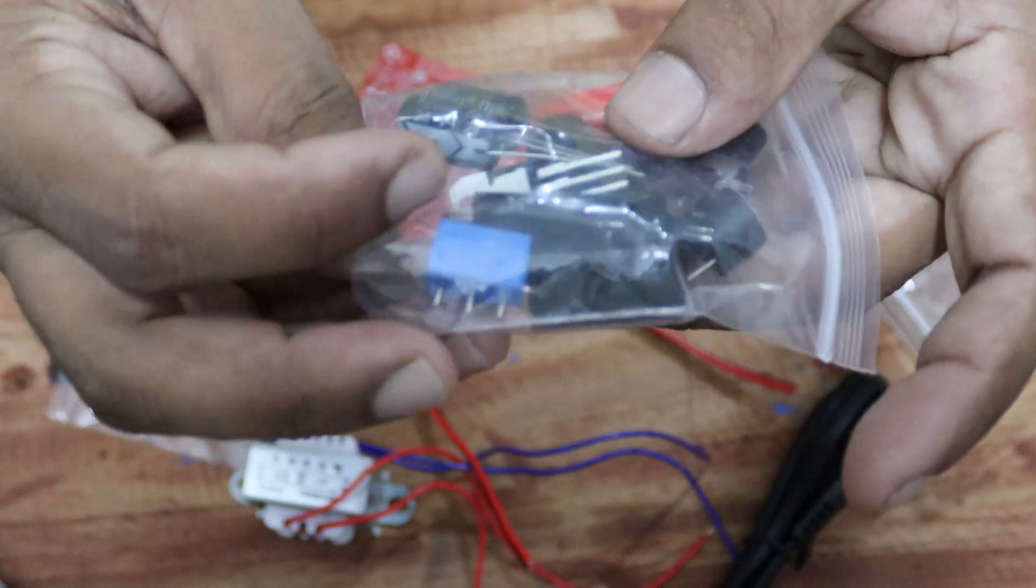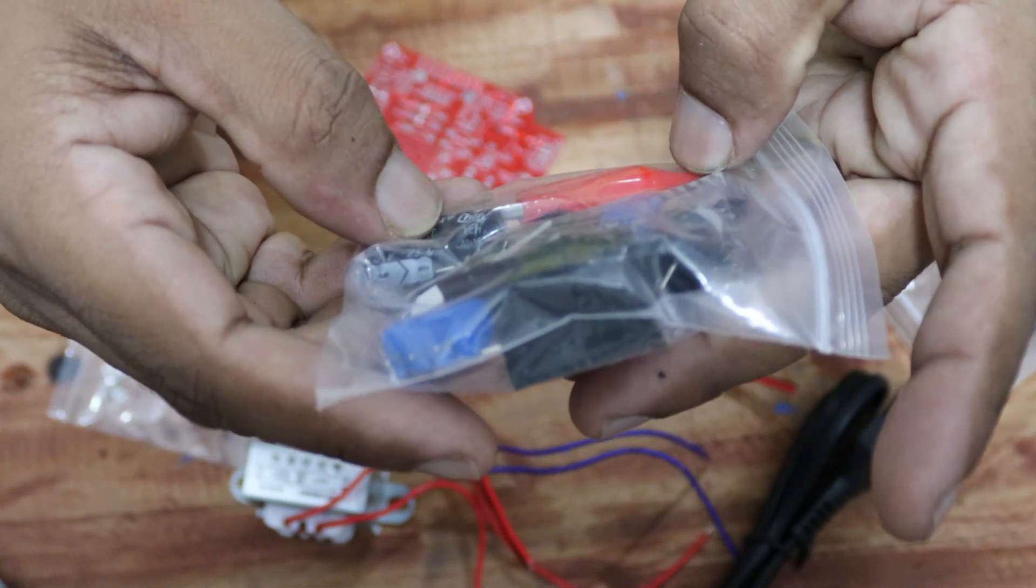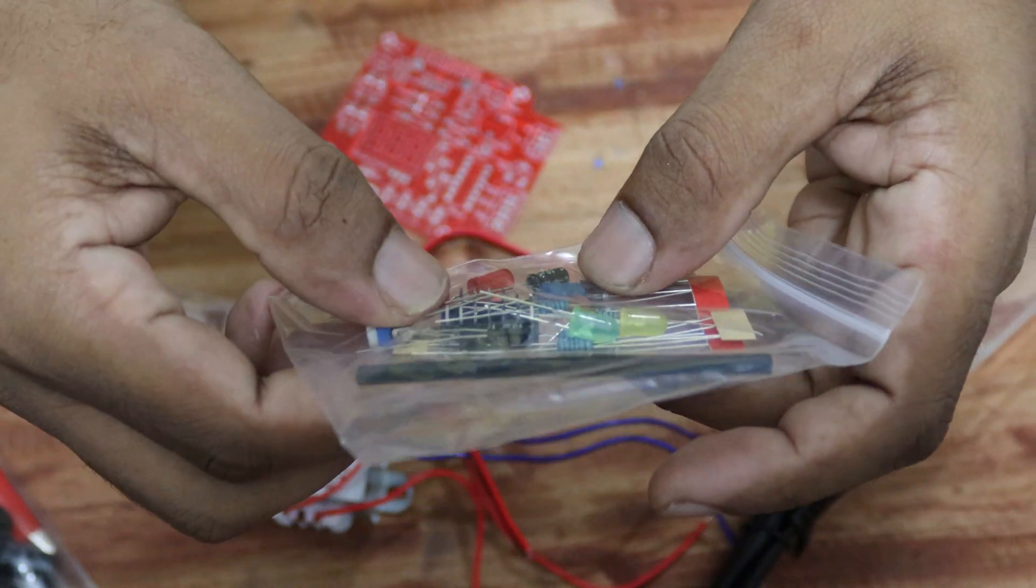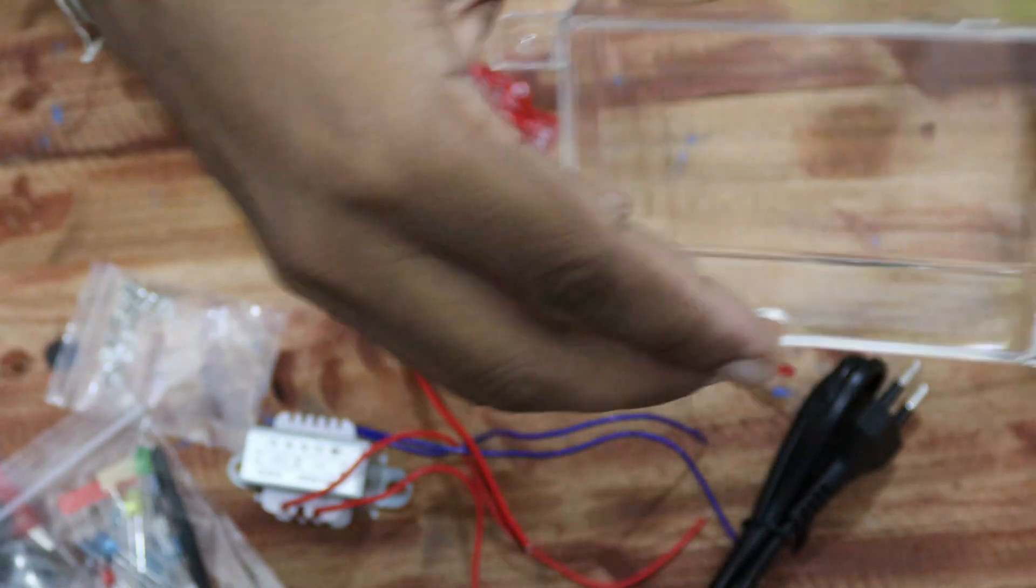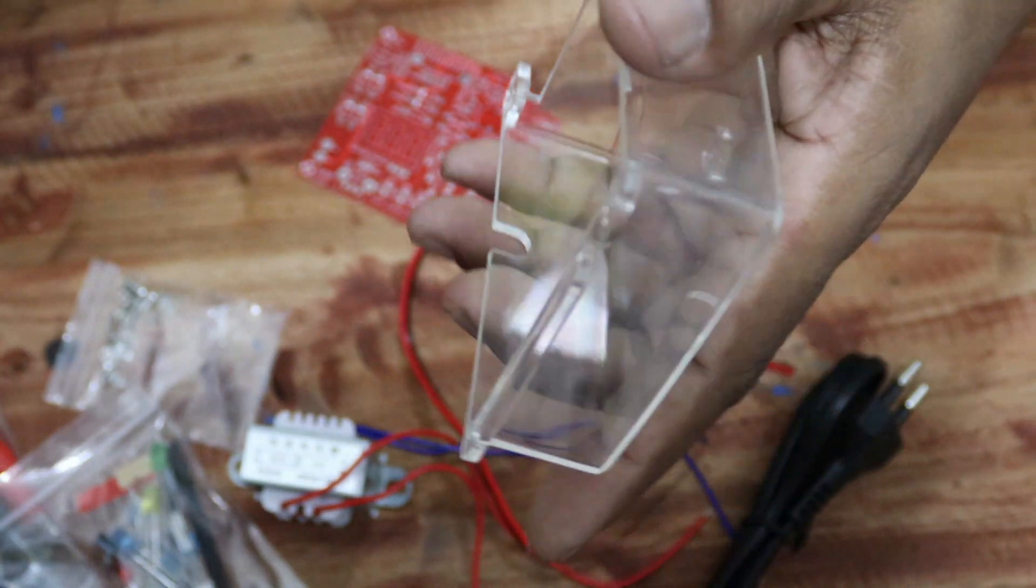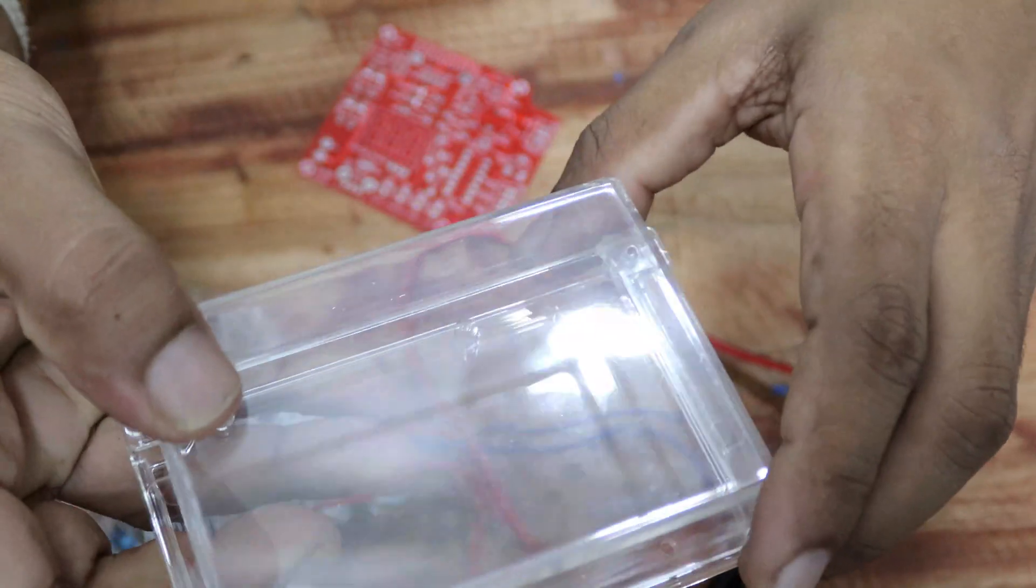Electronic accessories such as capacitors, ICs, resistors, LEDs, diodes and all the required parts are included. This is the project box where you can assemble the project.